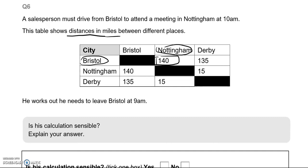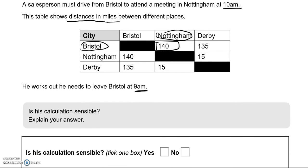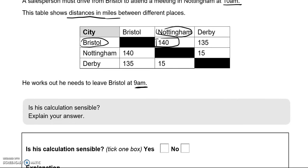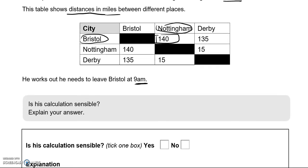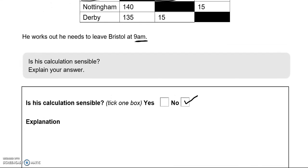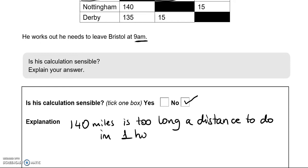Now, he's expecting to complete the journey within one hour, 9am to 10am. And that is not enough because you can't really drive at that speed in between the cities. So is the calculation sensible? No. Explanation: 140 miles is too long a distance to cover in one hour.